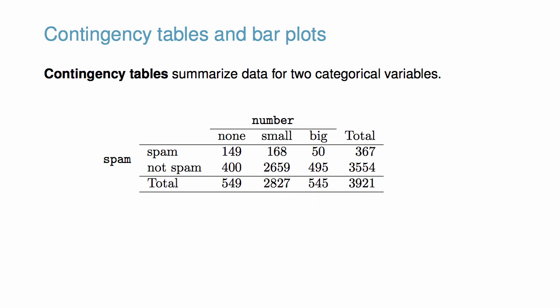We are interested in exploring relationships in the email dataset, and contingency tables can be a very helpful tool in this context, because contingency tables summarize data for two categorical variables. Contingency tables like this one provide considerable information. By looking at the interior cells, we can see the number of emails satisfying a particular level in each categorical variable. For example, the table shows that there were 2,659 emails that contained a small number and were not spam.